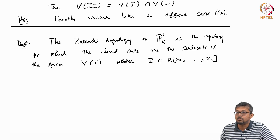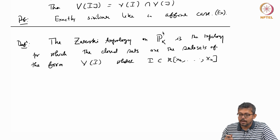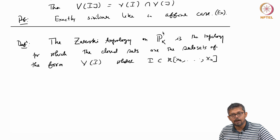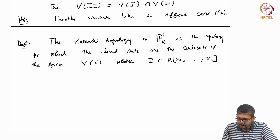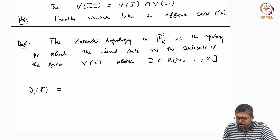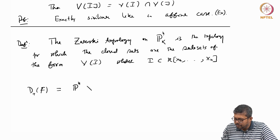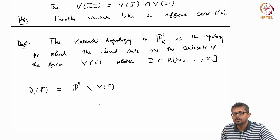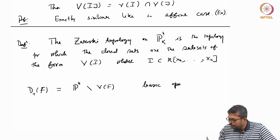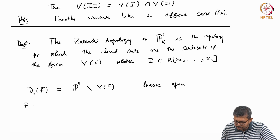These are the closed subsets of P^n(K). Now, in the case of affine, the D+(f). So if you define D+(f), it is generated by — it is nothing but P^n minus V(f). So these are the open subsets and these are called basic open subsets, where f is a homogeneous polynomial.